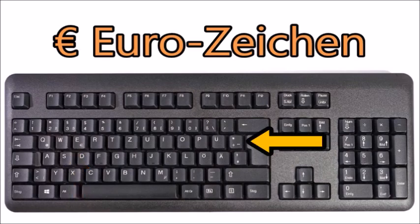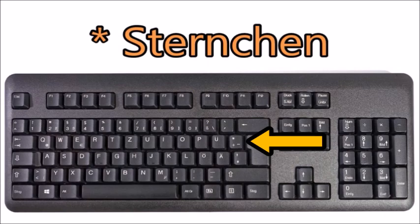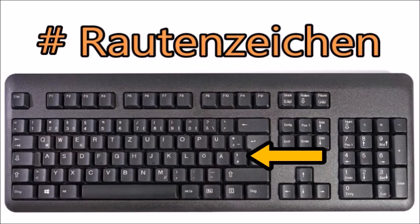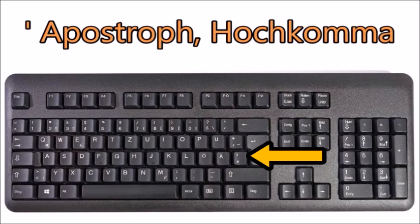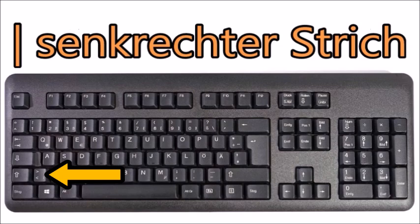To the right of the umlaut U there is plus. Shift+plus is the asterisk, called Sternchen (little star). Alt Gr+plus is the tilde, called Tilde. Under that key is the hash, called Rautenzeichen or Nummernzeichen. Shift+hash is an apostrophe, Apostroph or sometimes called Hochkomma. In the bottom left corner we have the greater-than and less-than signs, called größer-als-Zeichen and kleiner-als-Zeichen. Alt Gr of this key produces the pipe, called senkrechter Strich (vertical line).